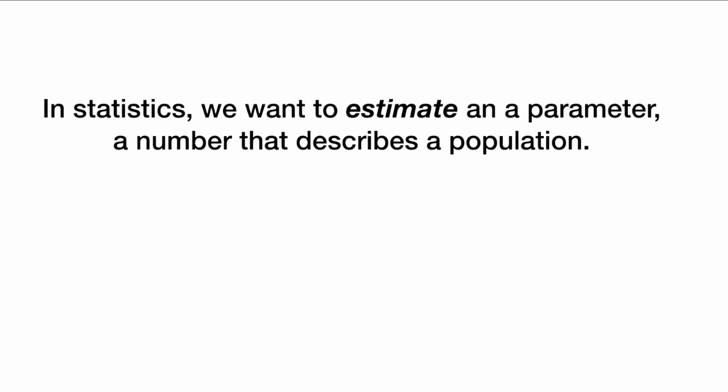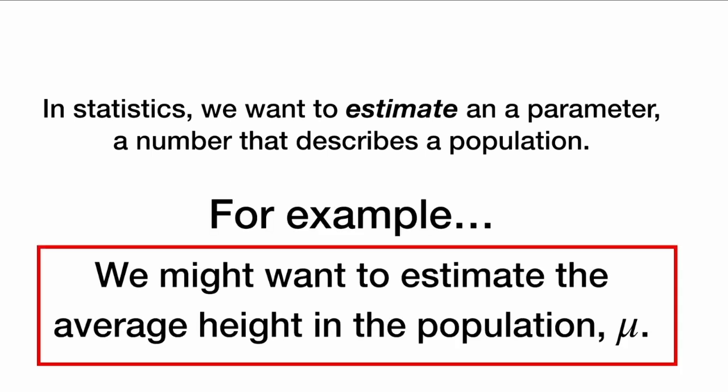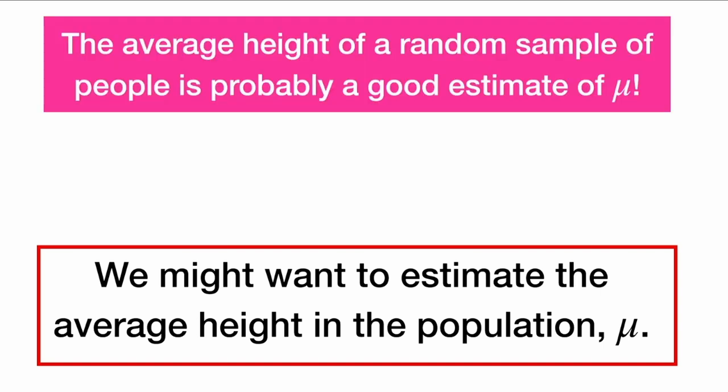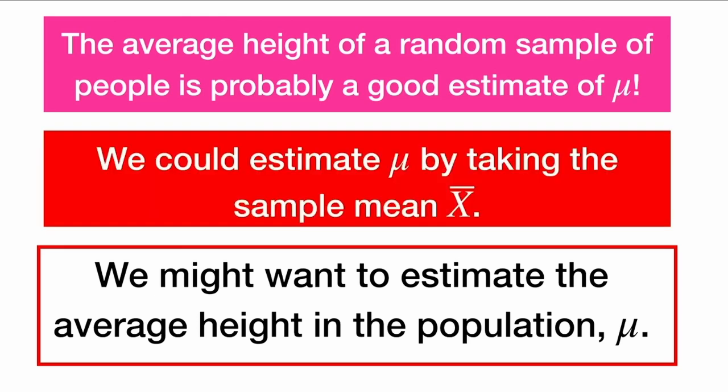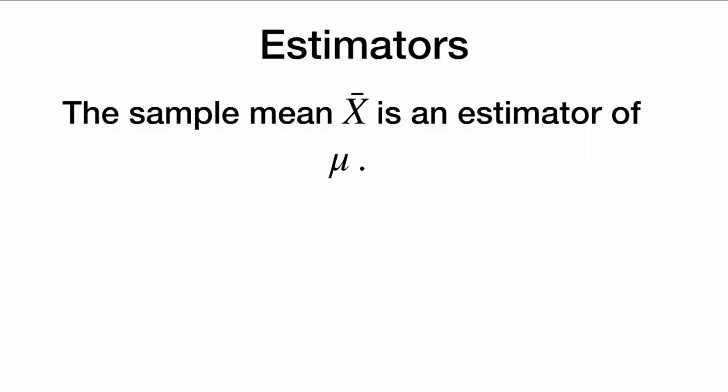In statistics, we want to estimate a parameter — a number that describes a population. For example, we might want to estimate the average height in the population, which we call mu. The average height of a random sample of people is probably a good estimate of mu. We could estimate mu by taking the sample mean x-bar, so x-bar is an estimator of the true mean mu.